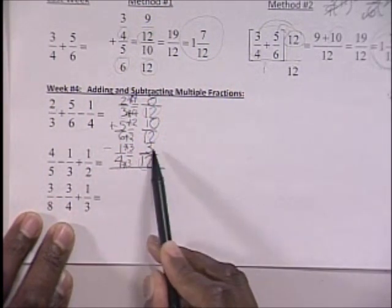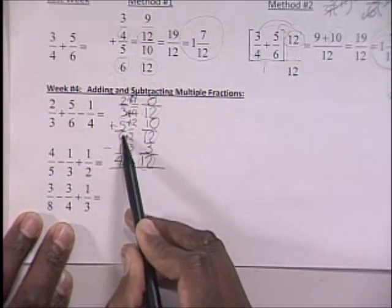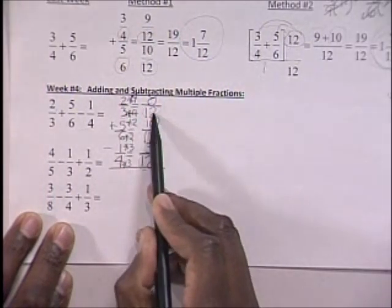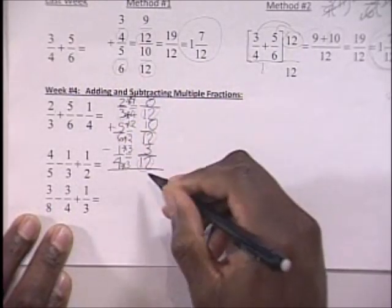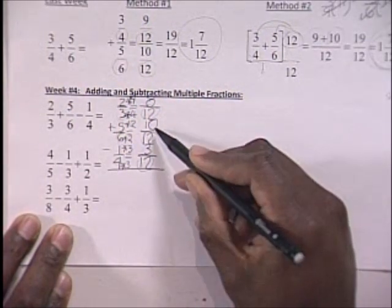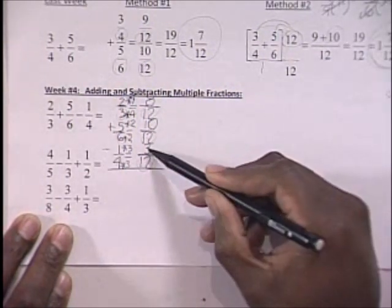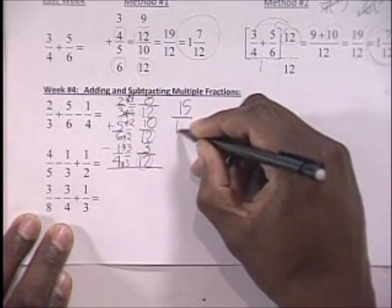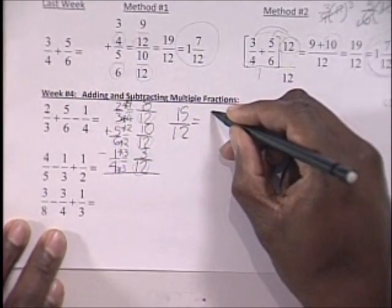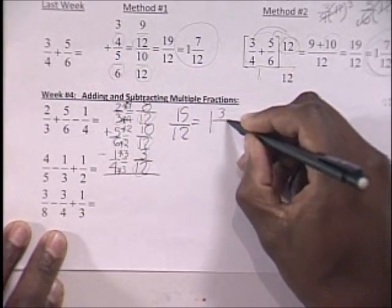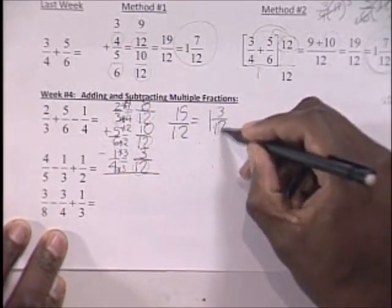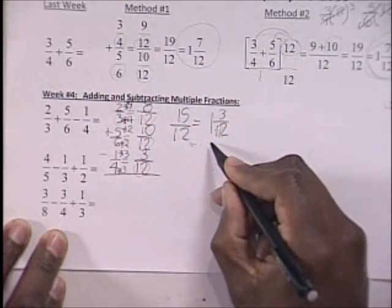1 fourth equals 3 twelfths, 5 sixths equals 10 twelfths, and 2 thirds equals 8 twelfths. Now that you have a common denominator, you add 8 plus 10 to get 18, then subtract 3: 18 minus 3 equals 15. You end up with 15 over 12, which simplifies to 1 and 3 twelfths, and that further simplifies to 1 and 1 fourth. Final answer: 1 and 1 fourth.